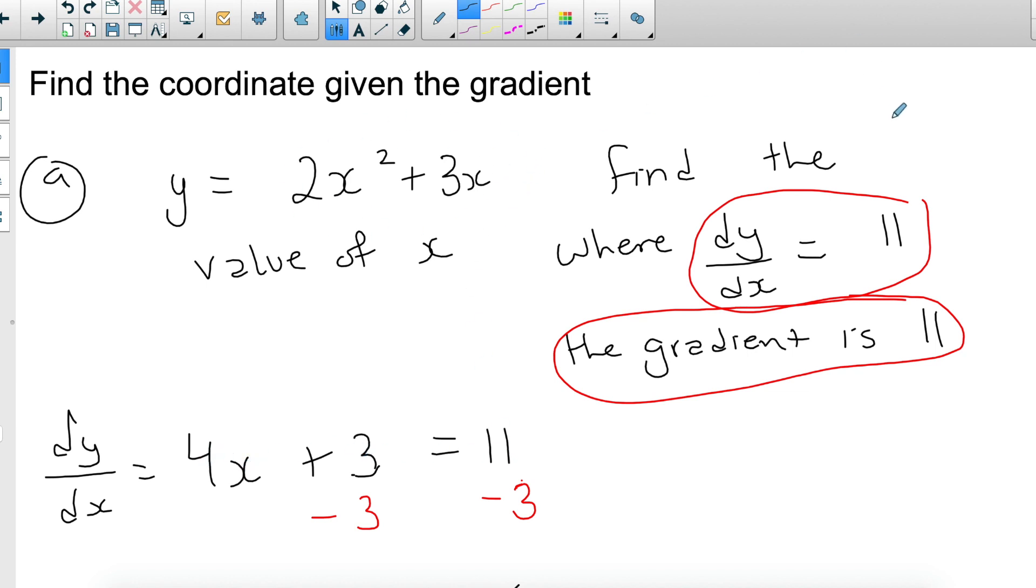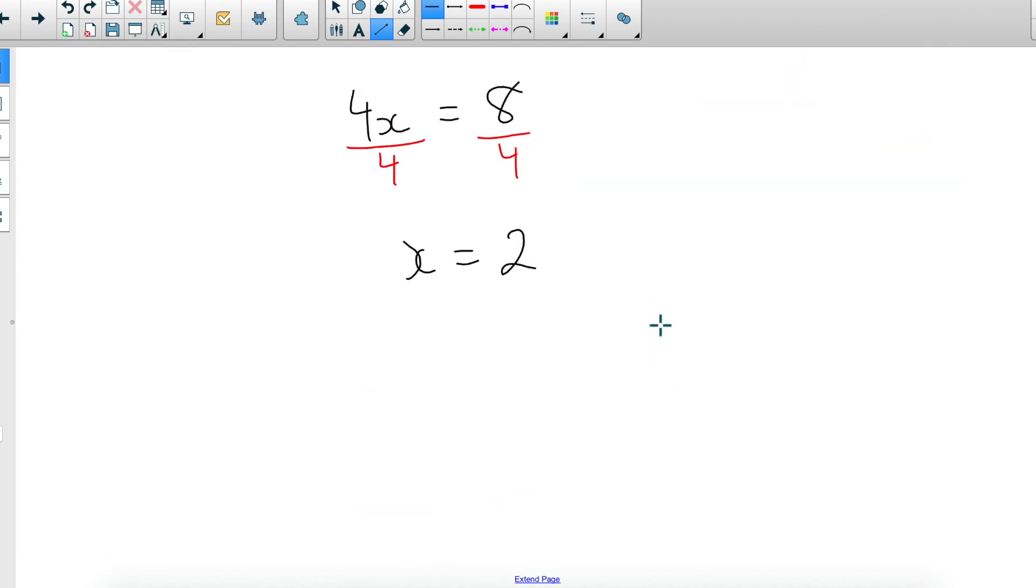But it means for this function, which looks like this, at precisely 2, the gradient or the gradient of the tangent at that point is 11. So this is what this thing—so that's basically it. You are equating the function.